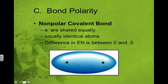So the difference in the electronegativity for nonpolar covalent bonds would be between 0 and 0.5. If that difference is somewhere between those two numbers or at that number, we say it's nonpolar.